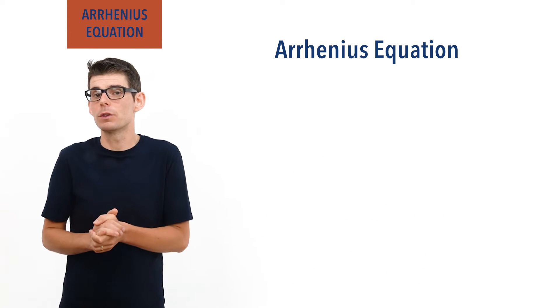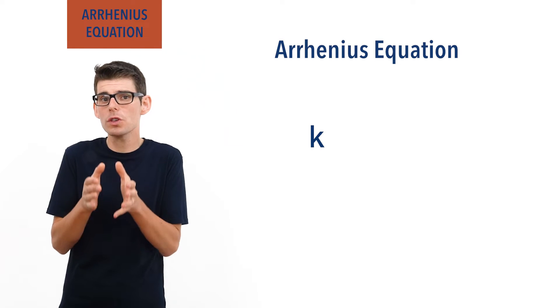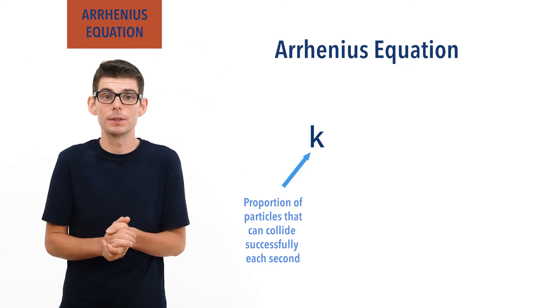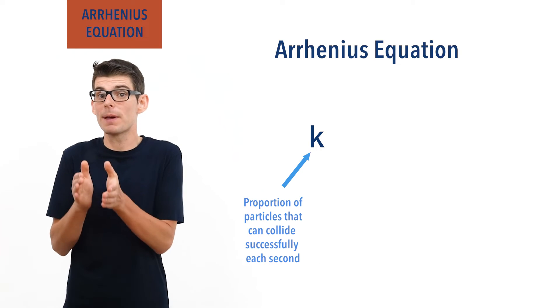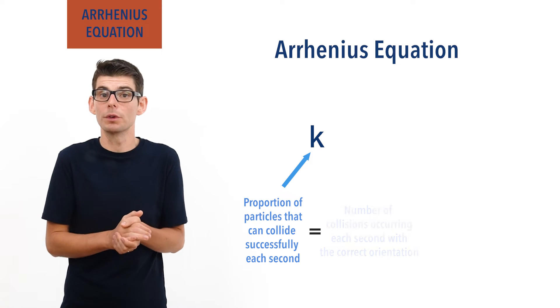Remember that the whole point of the rate constant k is essentially to tell us the proportion of reacting particles that can collide successfully each second, and this proportion is based on the number of collisions that occur each second with the correct orientation.